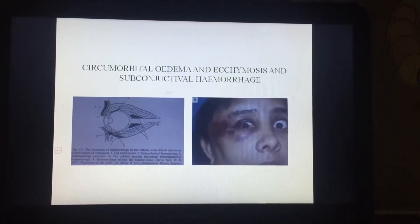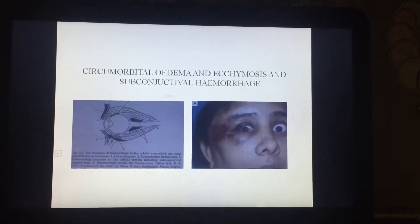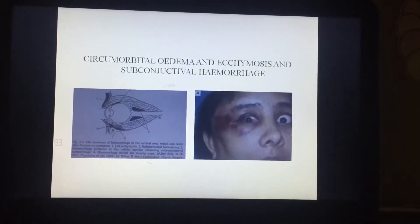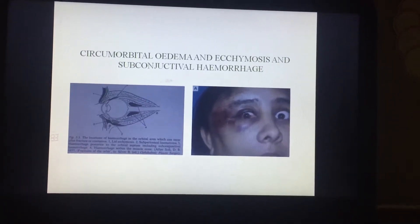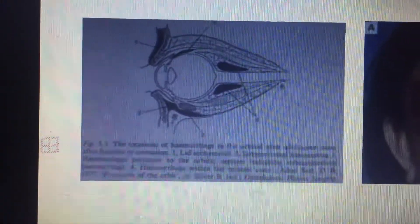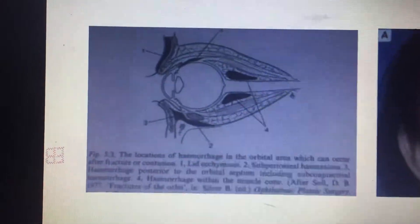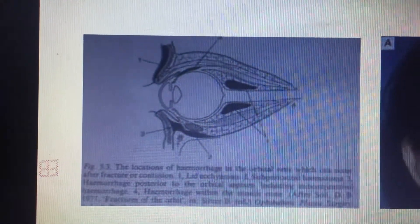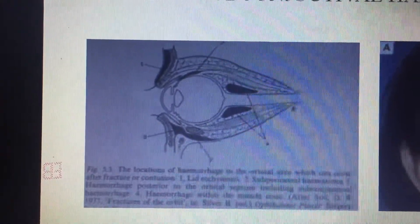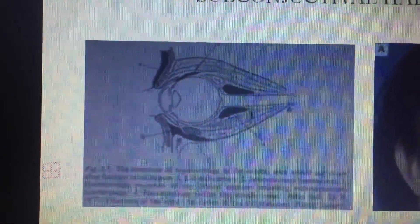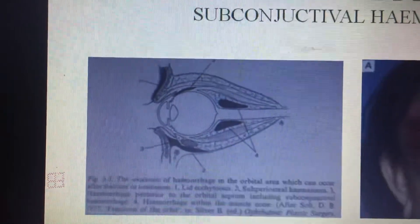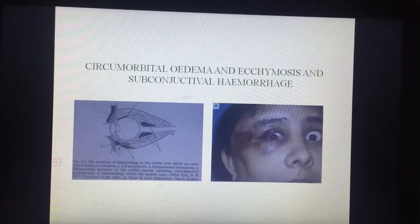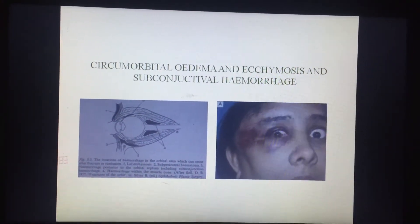The other clinical features are circumorbital edema, ecchymosis, and subconjunctival hemorrhage. In this slide we are going to talk regarding the location of hemorrhage in the orbital area, which can occur after fracture or contusion. In this image, certain areas are marked which are indicative of hemorrhage occurring because of different reasons — that may be ecchymosis, hemorrhage within the muscle cone, or subperiosteal edema — resulting from trauma.